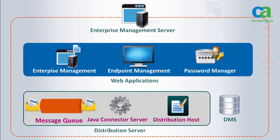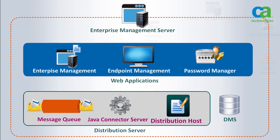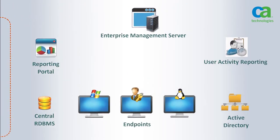The message queue's function is to collect and forward messages related to policy status, reports, and auditing. The Java connector server (JCS) communicates with Java-supported managed devices for SAM actions such as password resets and account exploration. The distribution host is responsible for distributing policies to endpoints and receiving their status updates. It is recommended that you use multiple relatively lightweight distribution servers across the enterprise to maximize availability and performance while minimizing chatter over wide area links.